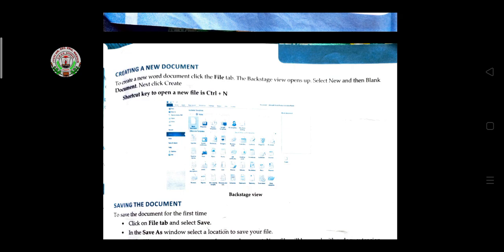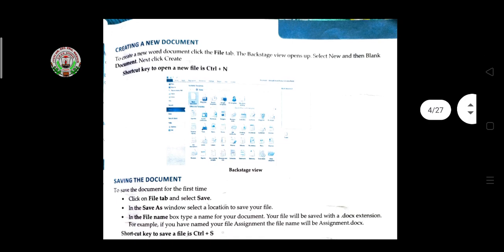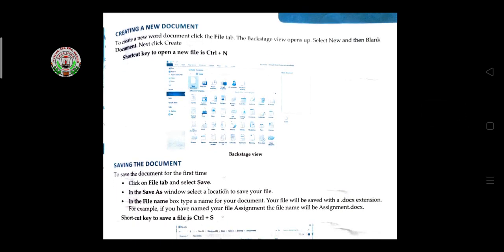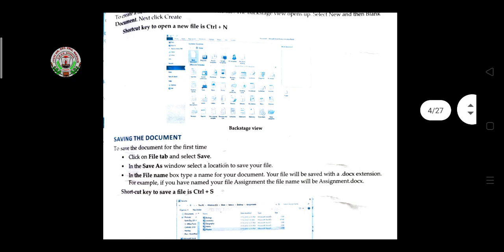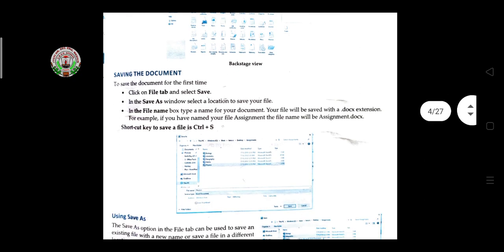To create a new document, click on the File tab. The backstage view will open, then select New, and a blank document will be created and displayed on the monitor. The shortcut key to open a new file is Ctrl+N.